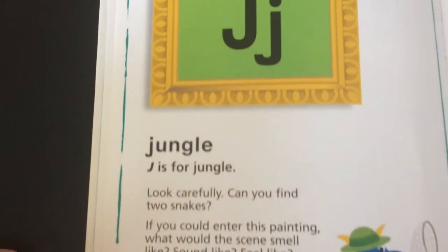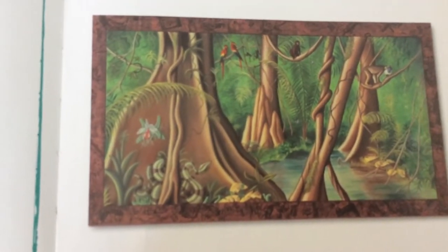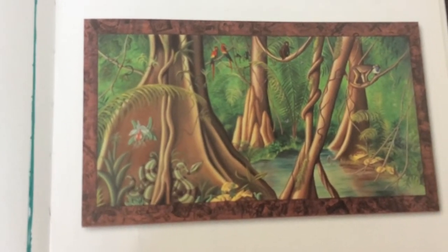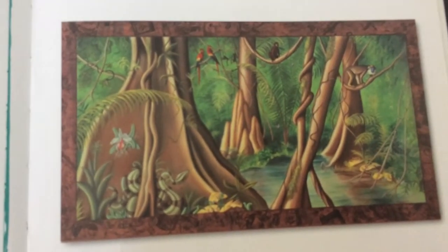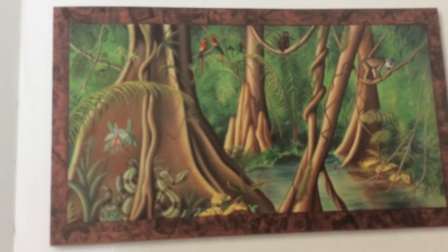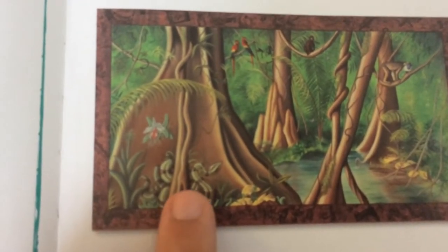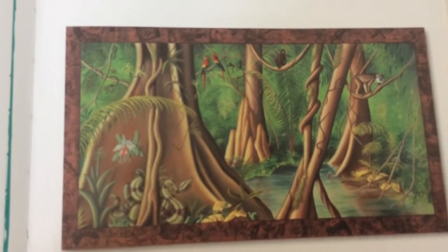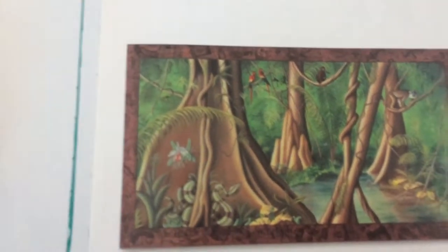J. Jungle. J is for jungle. Look carefully — can you find two snakes? Can you find them? There's one right there. Where's the other one? There's one right up there — a small black snake.